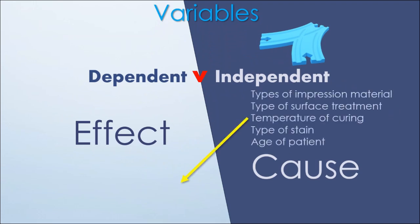For examples, types of impression, surface treatment, or temperature of curing are considered independent variables that could be related to dependent variables such as measuring accuracy, tensile strength, or dimensional changes.